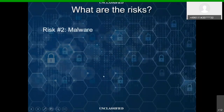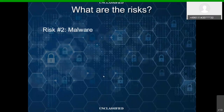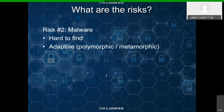Risk number two is malware. Malware is a truly insidious threat. It can be distributed through multiple delivery methods, and in some cases it's a master of disguise — hard to find. Some types of malware are known as adaptive malware, such as polymorphic or metamorphic malware. They can change their very genetic makeup — their coding itself — and morph into something else that can subvert the scanners that are out there.